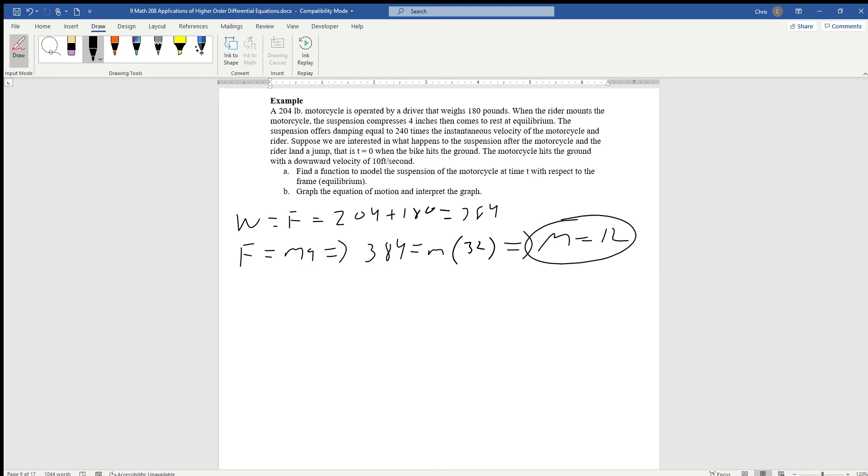We need a spring constant. F equals kx. We know 384 is the force, we don't know what k is. In this case, x is how far we are stretched beyond equilibrium, and we are stretched 4 inches when we exert the force of 384 pounds.